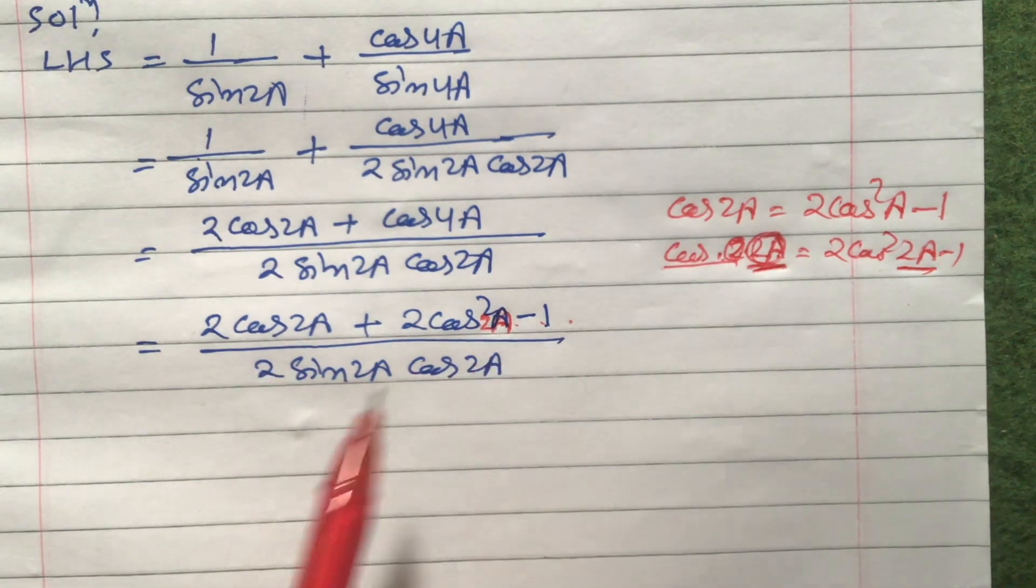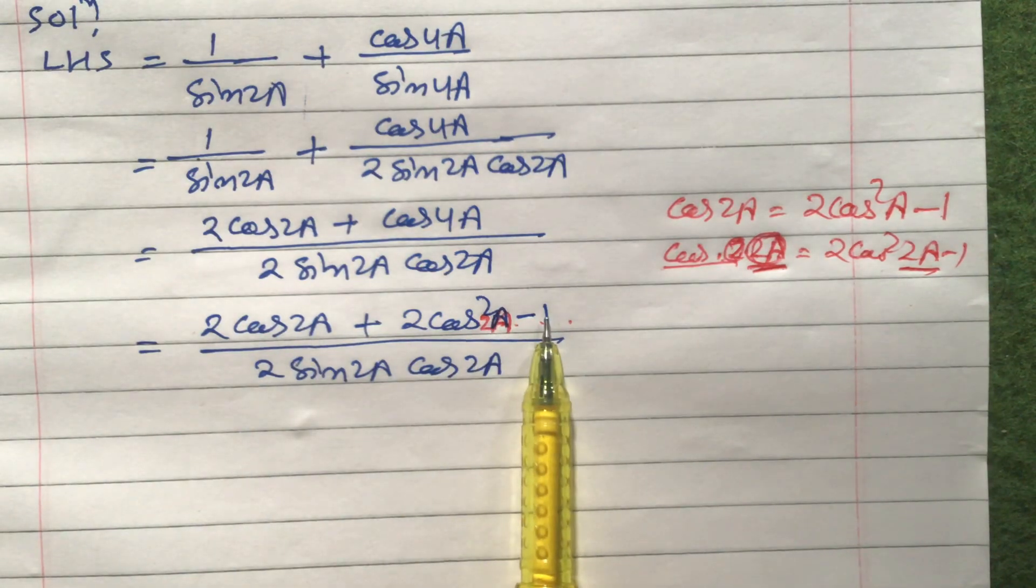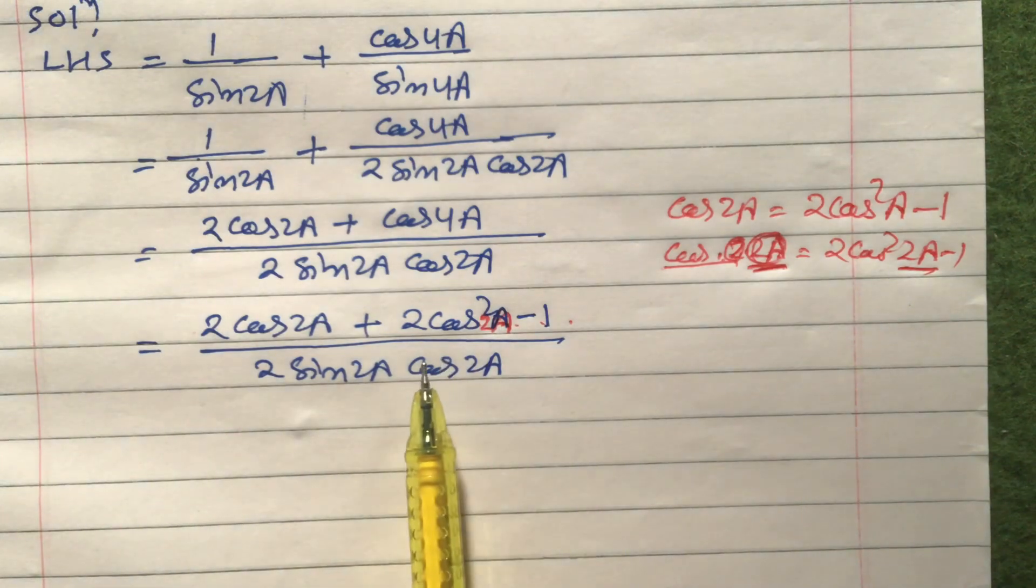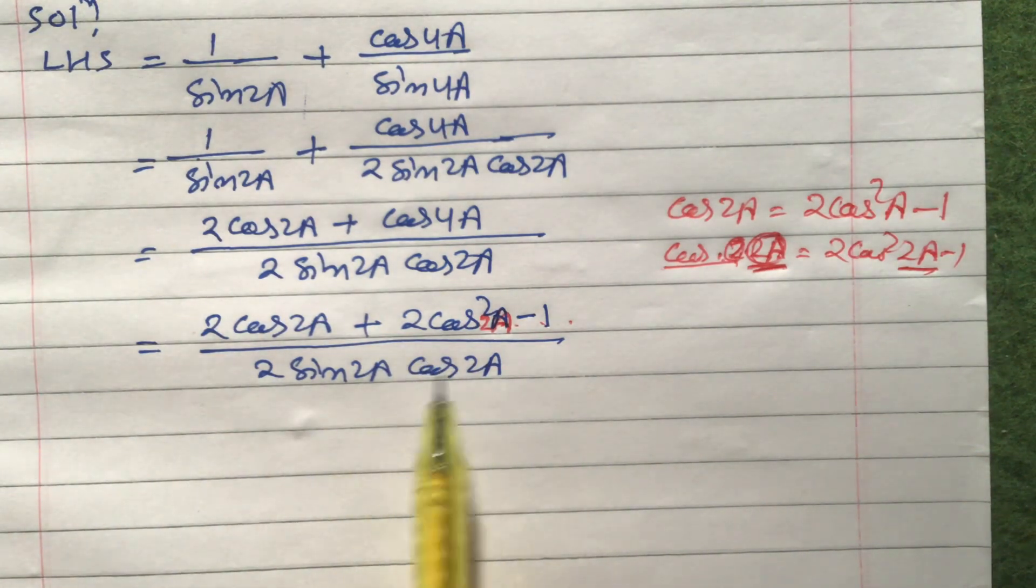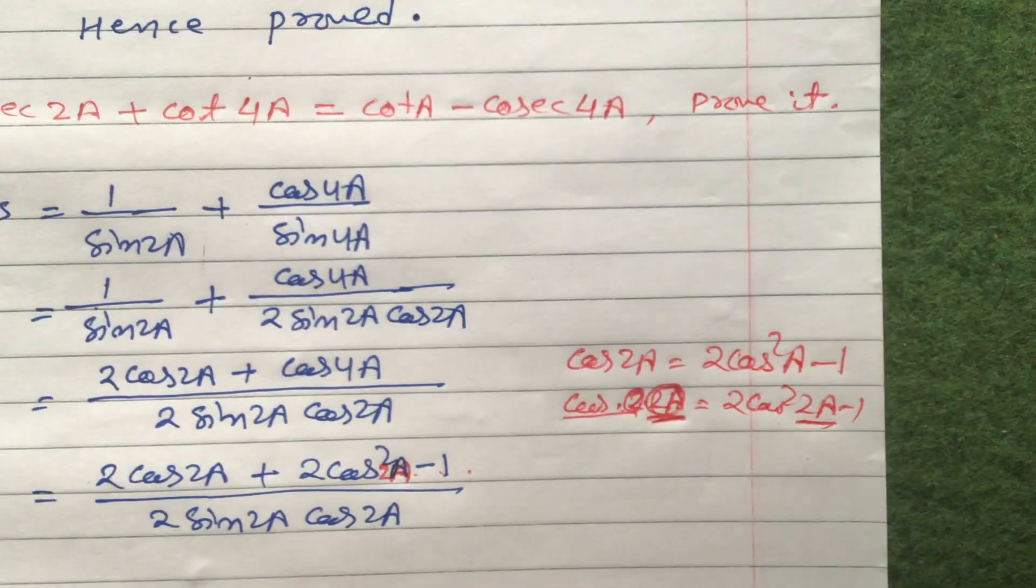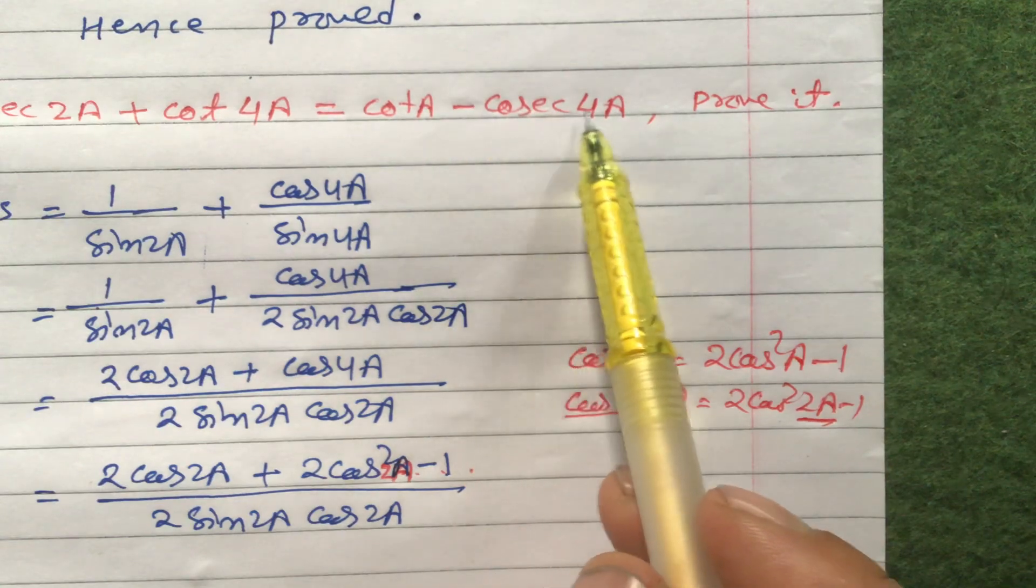Now what to do here? We cannot take LCM also. We cannot take common also. If you take common, in these two only there is one. We cannot add also. We cannot subtract also. So we have to get the idea from RHS. Look at here. If you look at RHS, we have got cot a minus cos 4a.